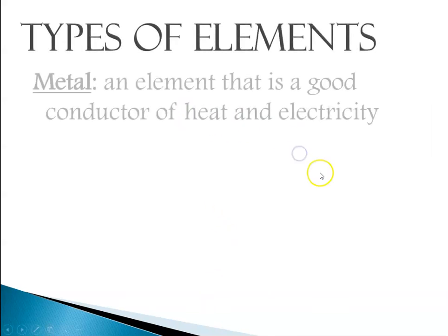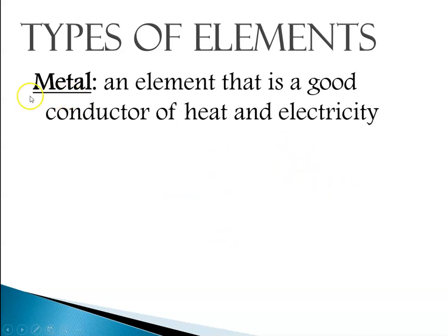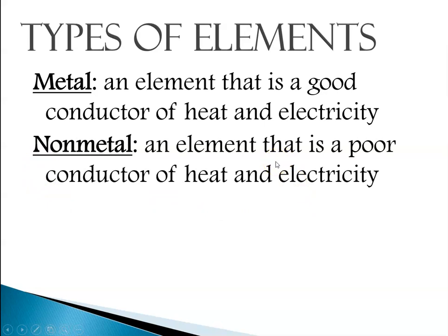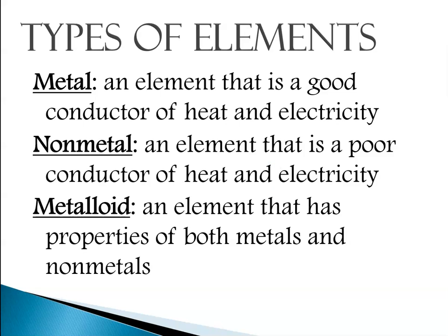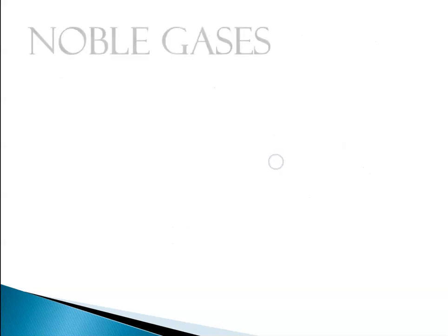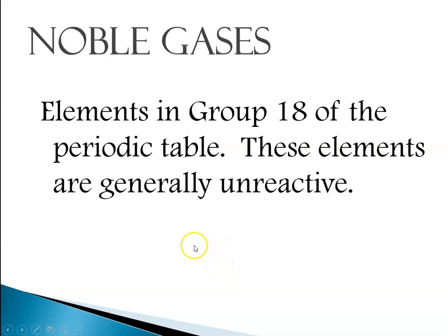When we talk about the types of elements, there are three types. There are metals, which are elements that are good conductors of heat and electricity. There are nonmetals, which are in general poor conductors of heat and electricity. And then there are metalloids, which are elements that are in between metals and nonmetals and have properties of both. The last designation is group 18 — those elements are generally very unreactive. They behave as nonmetals, but because they are so unreactive we talk about them separately.